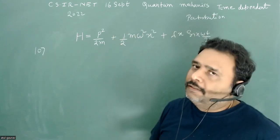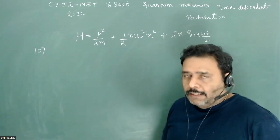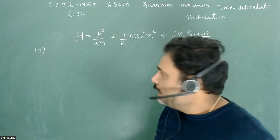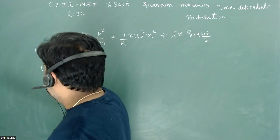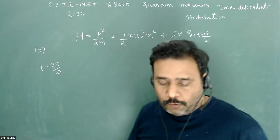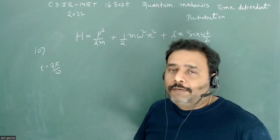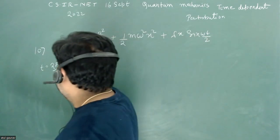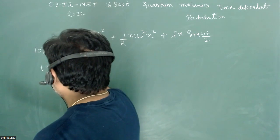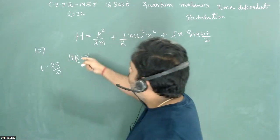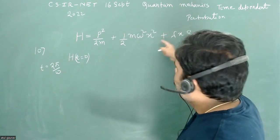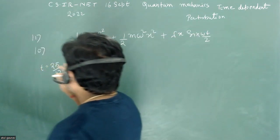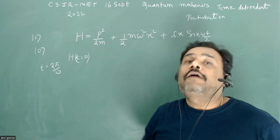This omega can be assumed to be the angular frequency. We have to calculate the probability that at time t equal to 2π/ω, the particle will be in the first excited state of the Hamiltonian at t equal to zero — that is, in state |1⟩. We need to find this probability up to order lambda squared.